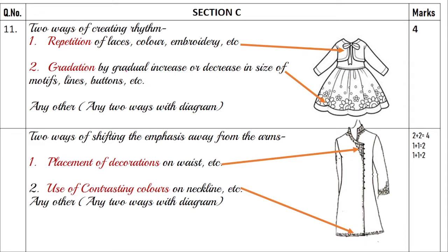The diagrams are important — it is more important how you represent and explain the diagrams. Repetition of laces, color, and embroidery: I have shown it here. This is repetition — I have repeated it again and again. Gradation is by gradual increase or decrease in size. Here, this is a bigger flower, this is a smaller flower, this is still smaller. You can draw a big circle, then a smaller circle, again smaller — this is gradation. You can also write down radiation and make use of puff sleeves.